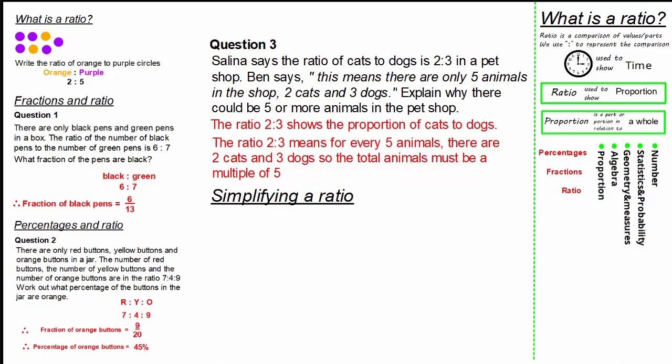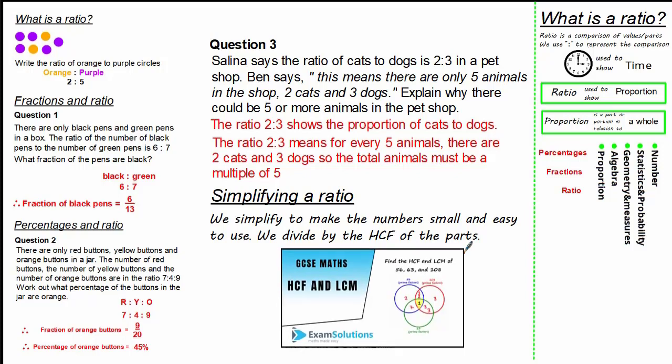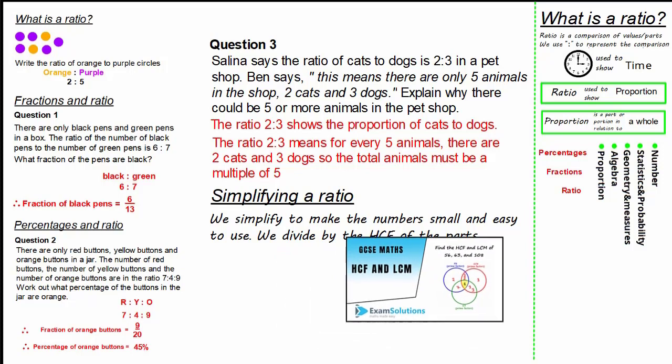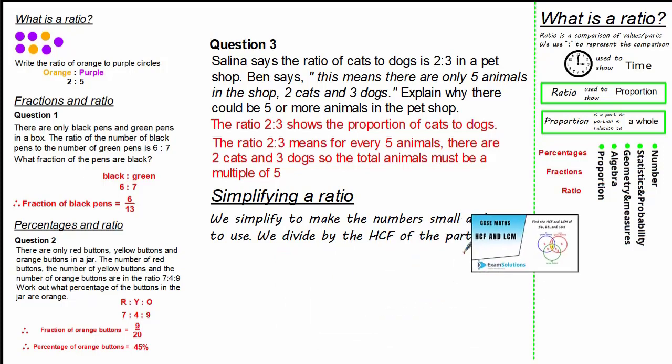This brings us nicely to simplifying ratios and why we simplify. The reason is simple: it's because small numbers are just easier to use. Just like cancelling down fractions, we use our knowledge on the highest common factor. And we simply divide by the highest common factor of the parts. Now, if you need to revise this, have a look at our highest common factor and lowest common multiple video. For now, we're going to look at another exam question.